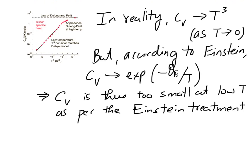This implies that the specific heat Cv is too small at low temperatures compared to reality as per the Einstein treatment. So where did Einstein go wrong? The error is because of the independent oscillator approximation. Einstein assumed that the entire lattice of N atoms may be replaced by 3N independent oscillators, all of them vibrating at one constant frequency ωE corresponding to the Einstein temperature θE.